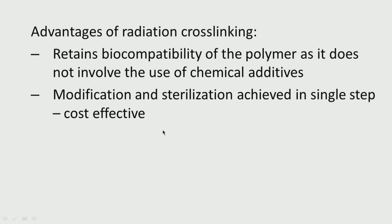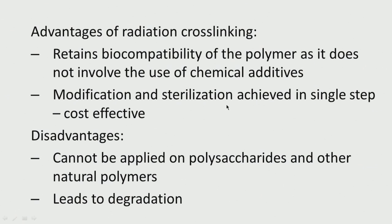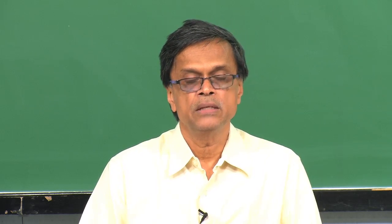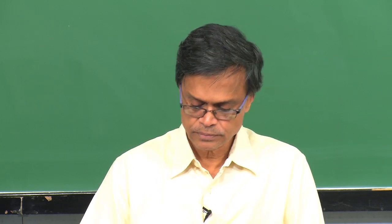The advantage of radiation cross-linking is that it retains the biocompatibility of the polymer as it does not involve chemical additives — using a chemical cross-linker can modify functional groups, reactivity, hydrophilicity, or surface energy. Radiation also achieves sterilization simultaneously, which is cost-effective. The main disadvantage is it cannot be applied to polysaccharides and other natural polymers because they will completely disintegrate, leading to degradation.